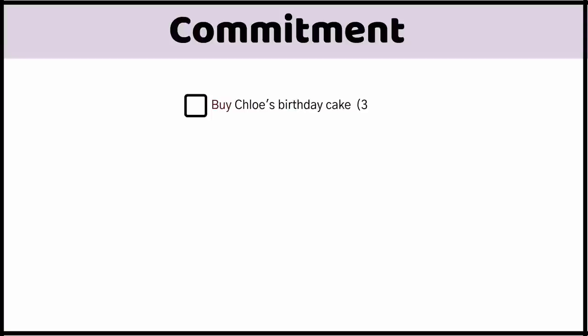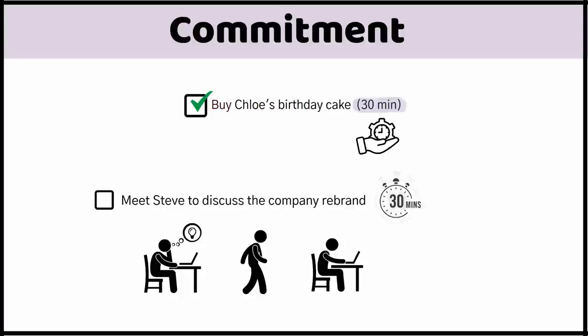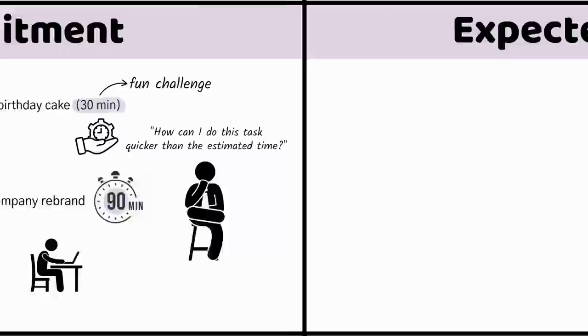After you've written down a task starting with an active verb, add a time commitment in brackets. Adding a time commitment to each task forces you to consider the total time required to complete a task, which makes you a more effective planner. For example, 'meet Steve to discuss the company rebrand' may initially seem like a 30-minute task, but when you factor in the time to prepare, the time to get there, and the time to write a post-meeting summary email, it's actually a 90-minute commitment. Adding estimated time commitments also turns your tasks into fun challenges — you can't help but think: how can I do this task quicker than the estimated time?